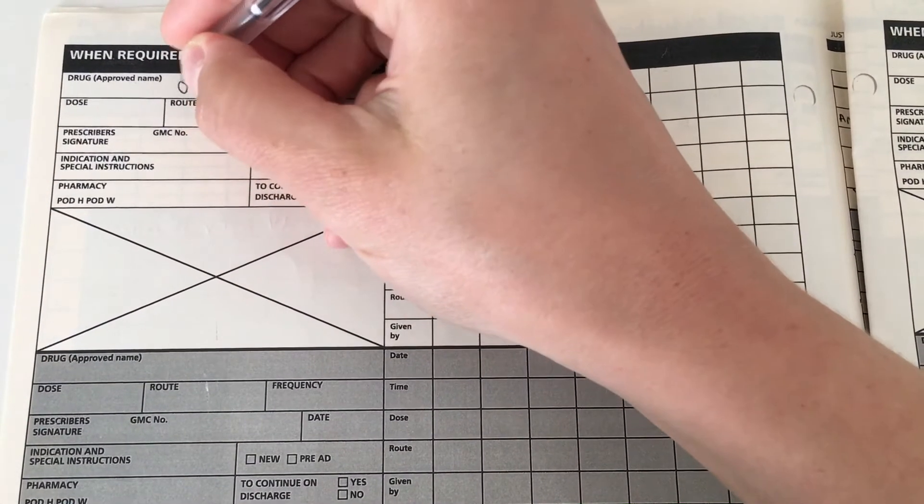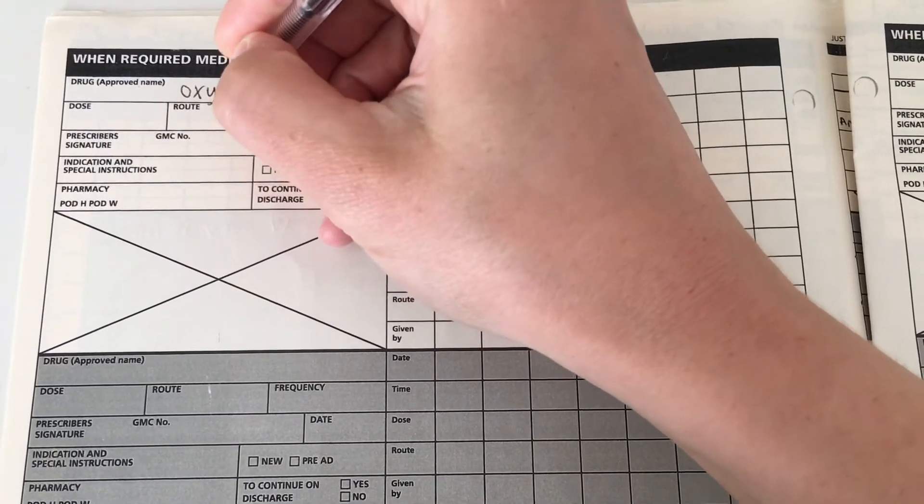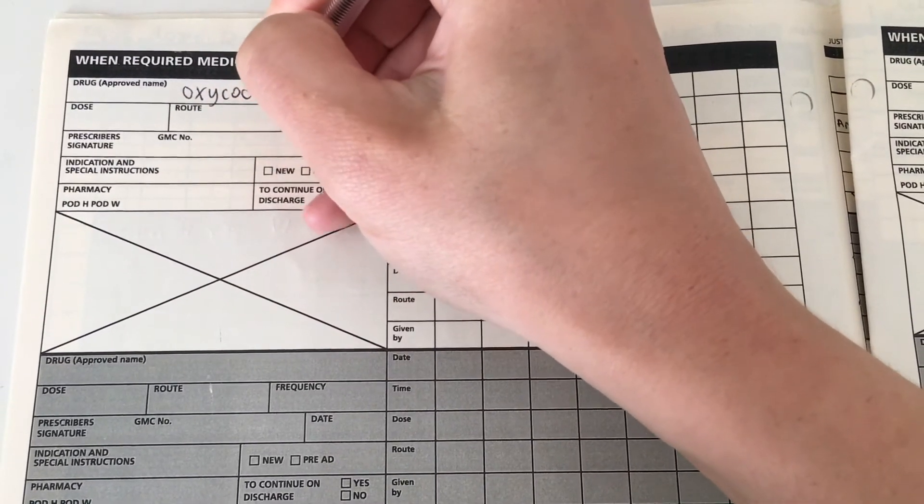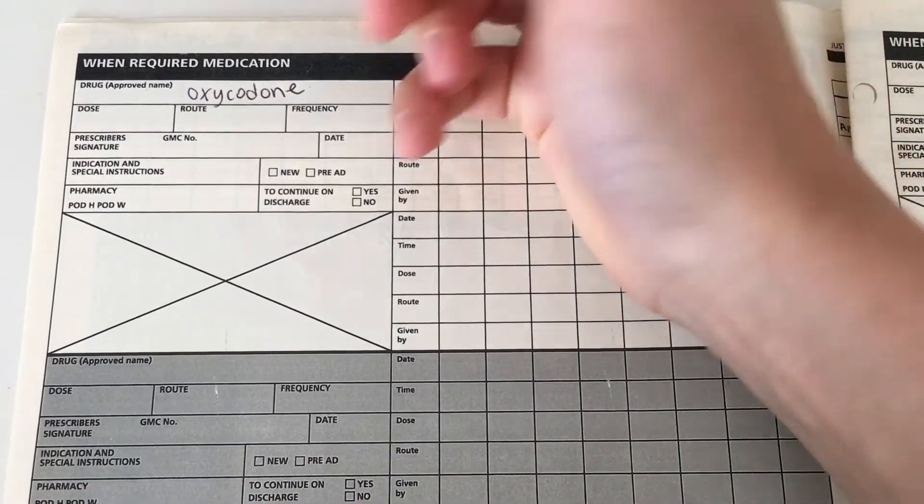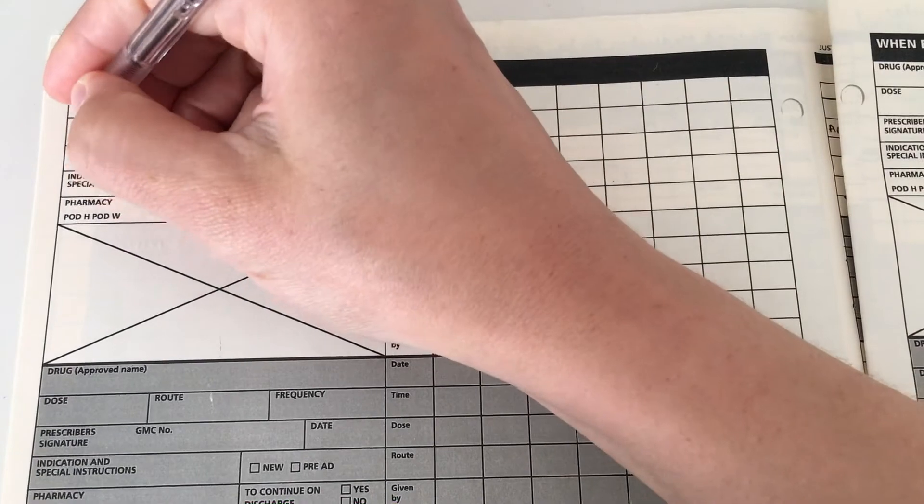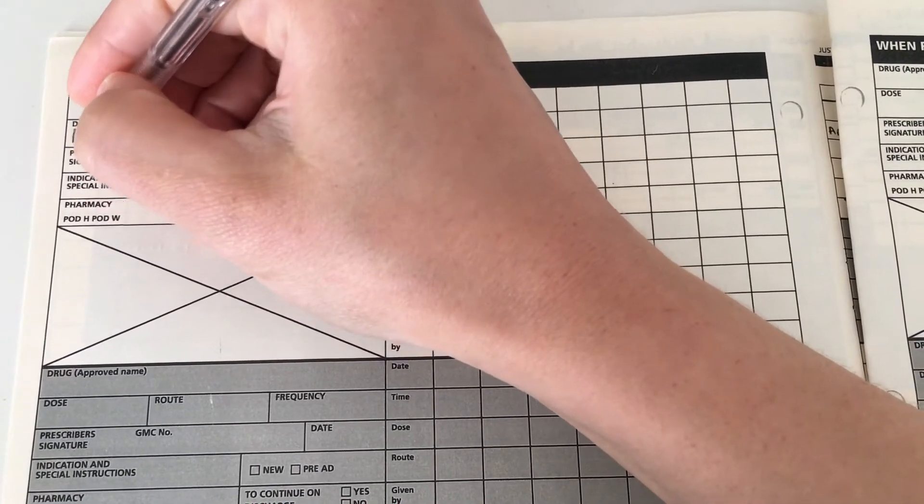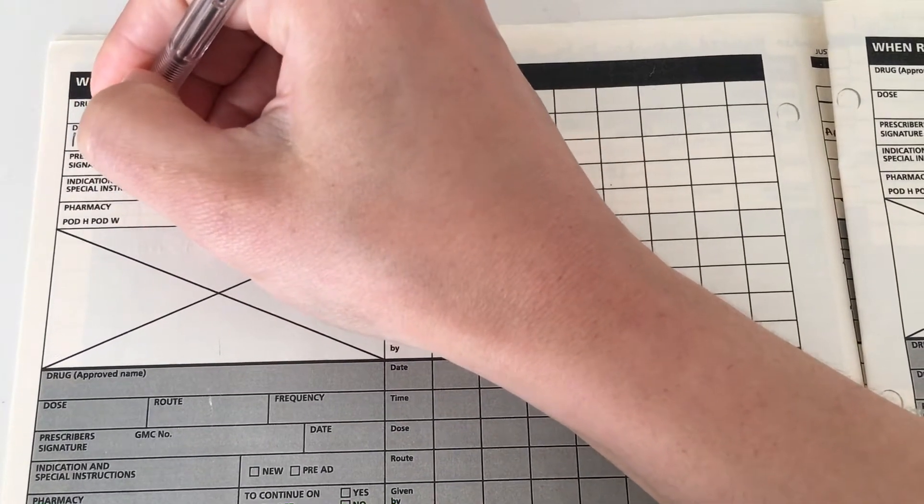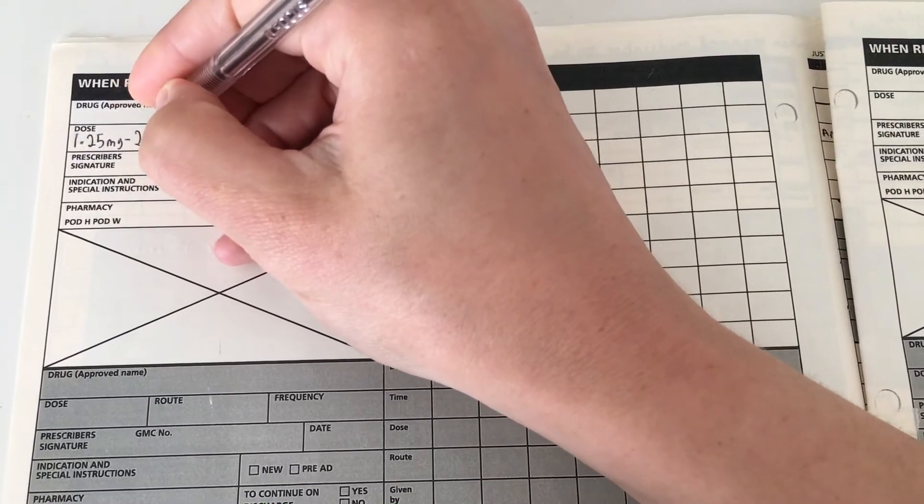Now we get to end of life medications. I included this because I think it's very helpful to have an idea of what's written up for patients who are nearing the end of their lives. Hospitals have palliative teams who get involved and will be able to guide you in the medication prescriptions, but it's very helpful to know these four medications because they're typically the ones that are given and they're quite easy to remember.